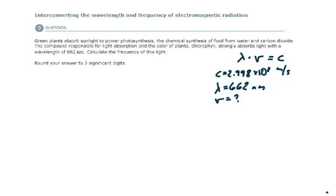Here in this problem they would like us to convert from wavelength to frequency. They gave us information about green plants and how they absorb sunlight to power photosynthesis. They say that the compound responsible for light absorption in the color of plants, chlorophyll, strongly absorbs light with a wavelength of 662 nanometers.